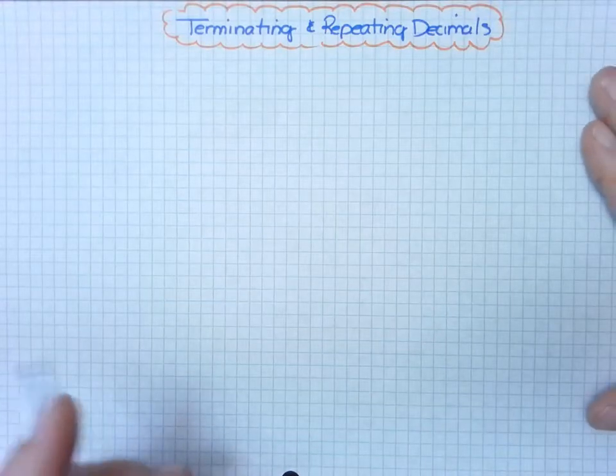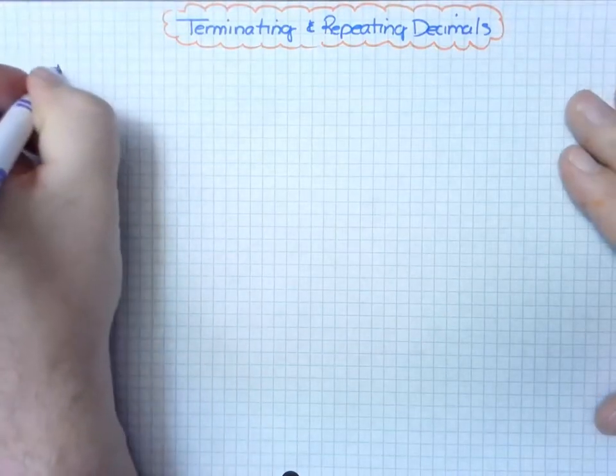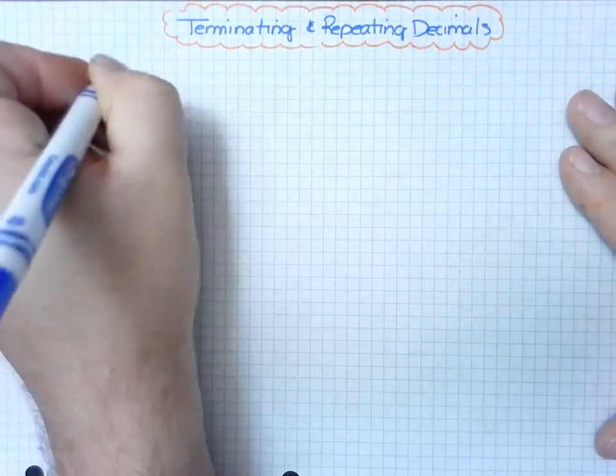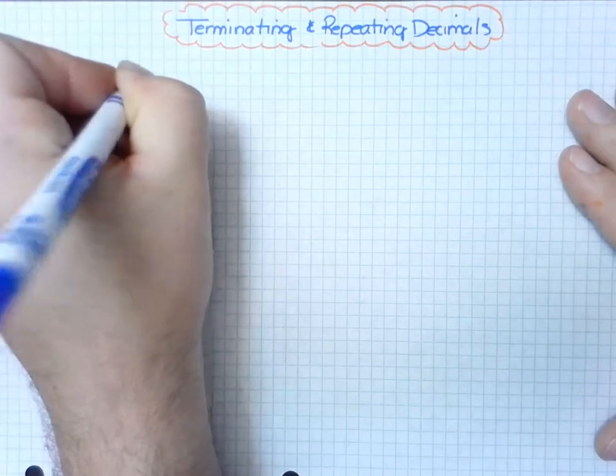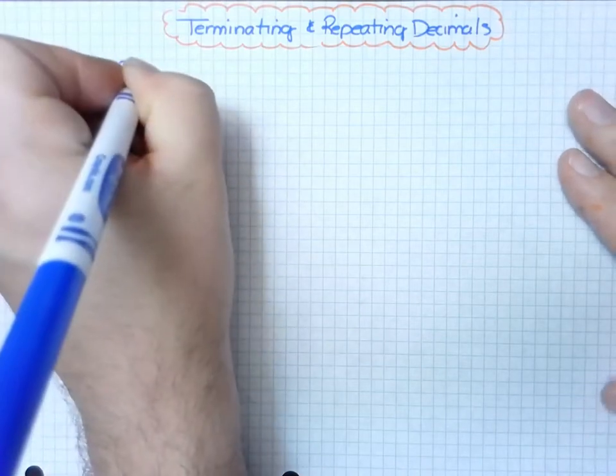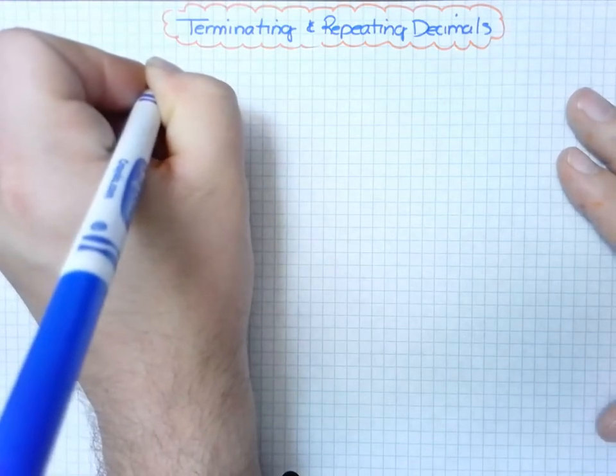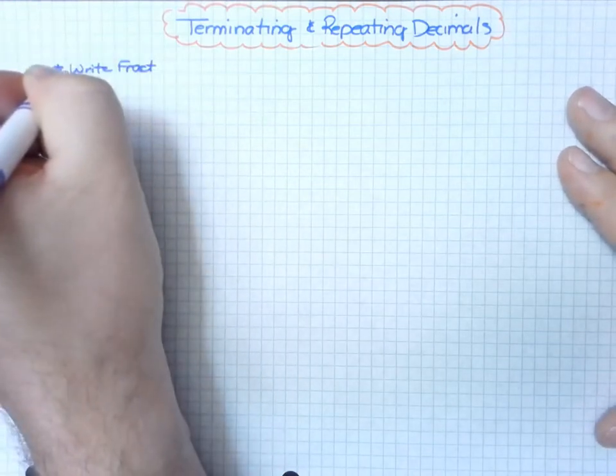Terminating and repeating decimals. There are two focuses today. One is to write fractions as decimals, and the other is to write decimals as fractions. Within that context, we will discuss terminating and repeating decimals.